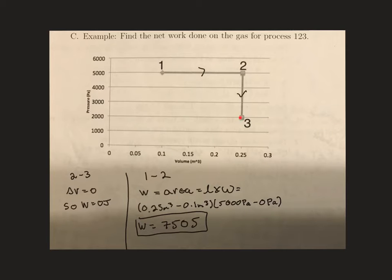I'm going to start with 2 to 3 because that's the easiest one to actually do. Because we have a graph, we're going to find the area underneath the curve in order to find the work done. And from 2 to 3, there's no area under here. So that means the change in volume is 0, so the work done is 0. So we don't have to worry about 2 to 3.